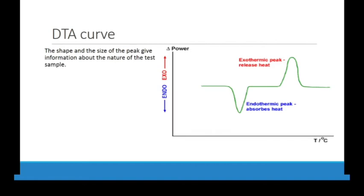The DTA curve is similar to the DSC curve. You have exothermic and endothermic regions. If your sample absorbs heat, you will see a dip — this is the endothermic peak. If you see an exothermic reaction, you will see a sharp peak in the graph. On the x-axis you have temperature or time, and on the y-axis you have delta T. This is the typical ideal DTA curve you normally see during analysis.